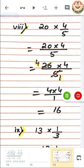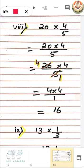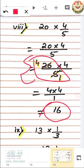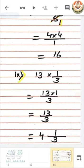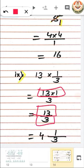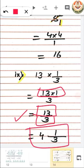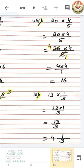For the next part, similarly, a whole number is multiplying with a fraction, but we can reduce it by dividing 20 and 5 by 5, giving 16 as our answer. In another part, 13 is multiplying with 1 by 3: 13 multiplied by numerator 1 gives 13 and the denominator is 3. They cannot be reduced, so 13 by 3 is our answer, which we can convert to the mixed fraction 4 and 1 by 3.